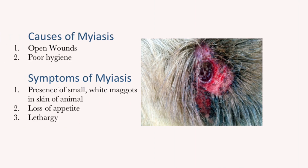Let us now look at the possible causes of myiasis. In the case of canine myiasis, a major cause is the presence of open wounds, which attract many fly species. Another possible cause is poor hygiene, especially in cases where parts of the dog's skin is constantly soiled by urine or faeces.